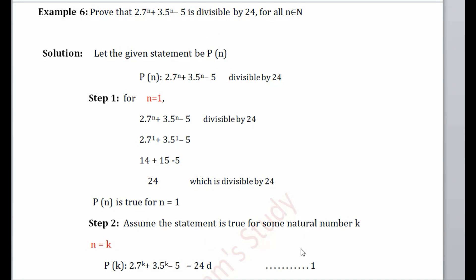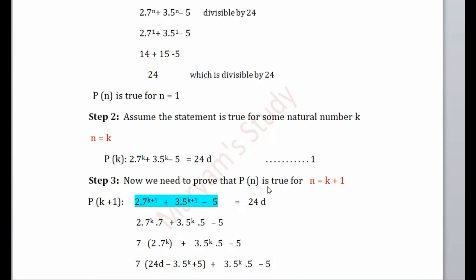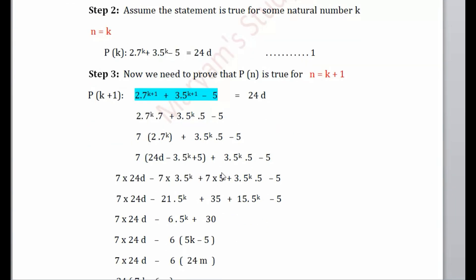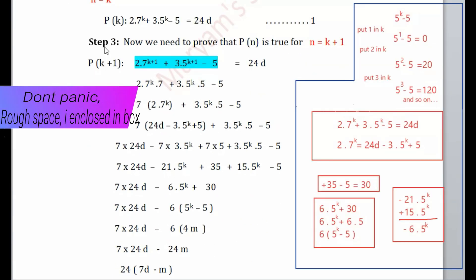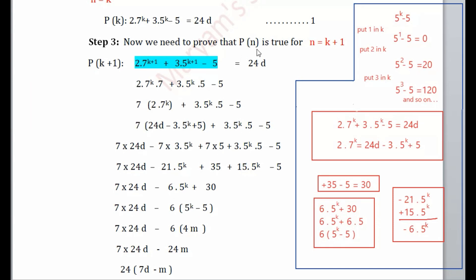In Step 3, we need to prove that the given statement is true for n = k+1 also. So we replace all k by k+1. This k is replaced by k+1, and what we ultimately need to prove is that this left-hand side — 2·7^(k+1) + 3·5^(k+1) - 5 — is divisible by 24. We will split this term.